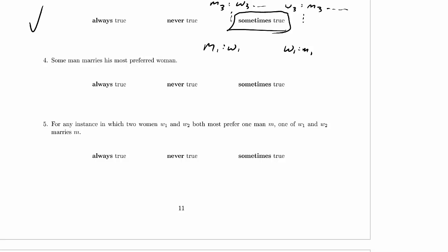Let's see if we can do it with two men. m-1's preference order is w-1, w-2. If m-2's preferences are distinct from m-1, then m-1 and m-2 are just going to get their preferences — m-1 proposes to a woman, she accepts, m-2 proposes to someone else, she accepts, and we're done. So somebody's going to marry w-1. That doesn't work with 2. Let's try with 3.